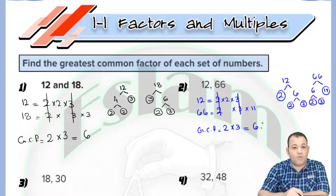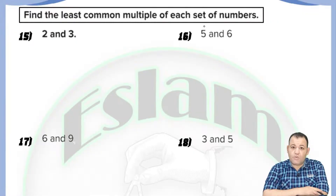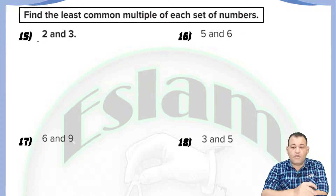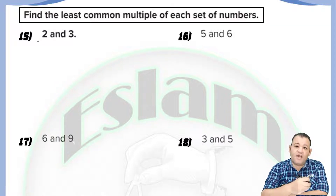And that's how we can find the greatest common factor. In this part of the lesson, we'll learn how to find the least common multiple. We need to find the least common multiple of 2 and 3. The multiple of a number is any number you can find in the times table of that number.